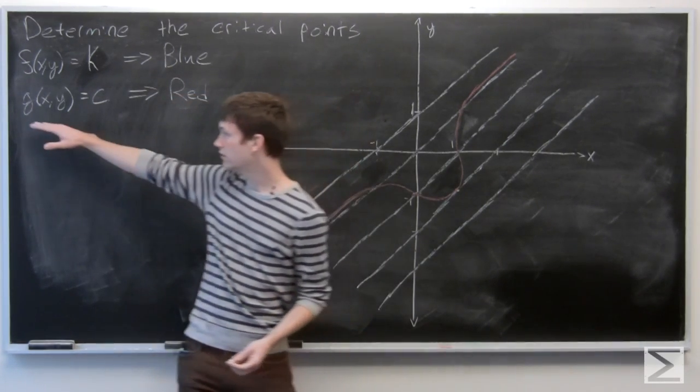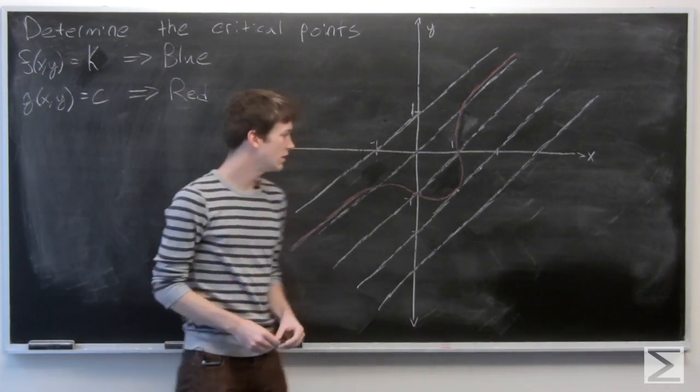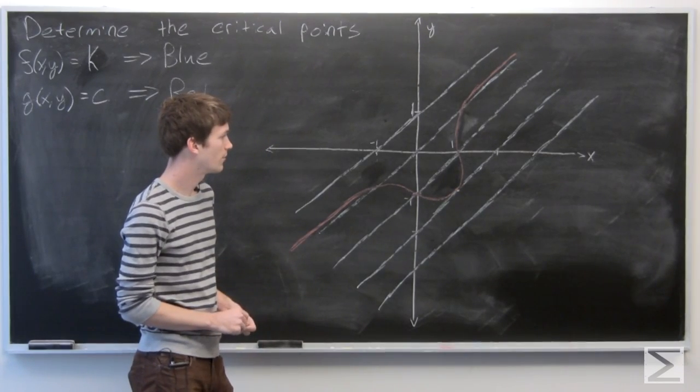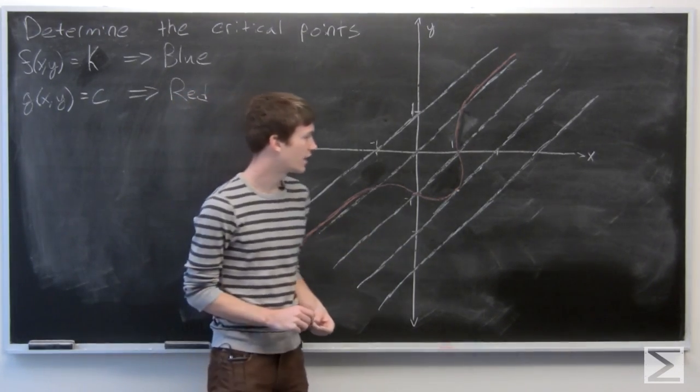And then our constraint g(x,y) equals c is given in red. And we want to find the critical points of f.